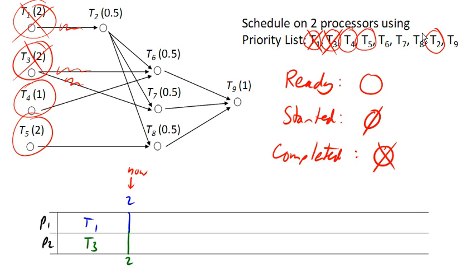But in terms of scheduling, I'm going to schedule the first thing on the priority list that's ready. So I'm going to assign task 4 to processor 1, and task 5 to processor 2.